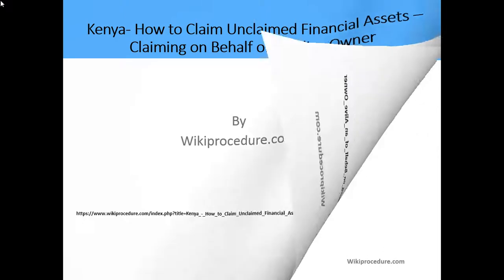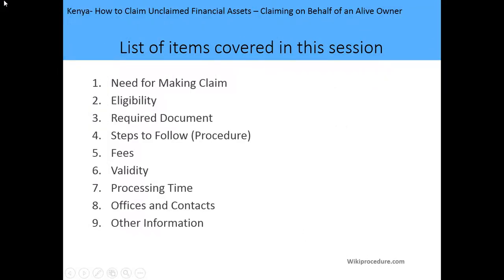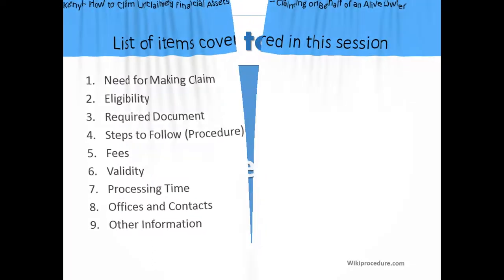The list of items we are going to cover in this session include: the need for making the claim, the eligibility criteria, the required documents, steps to follow, making the application, the fees, the validity period, processing time, office location and contact information, and any other information we may find necessary on how you can make this application to claim financial assets as an agent for an owner who is alive and an adult.